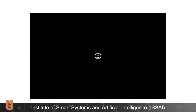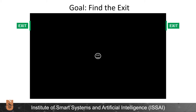Suppose you are standing in the middle of a dark room. There are two exit doors — you don't know where they are, but you want to find one. There are also two more wrong doors in the room; they are electrocuted, and if you find one, you will fail the game.